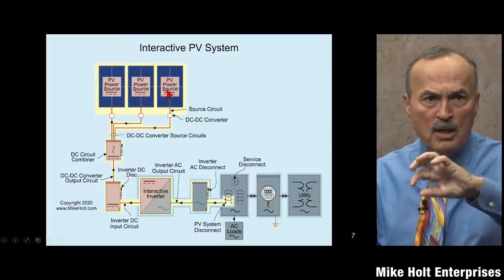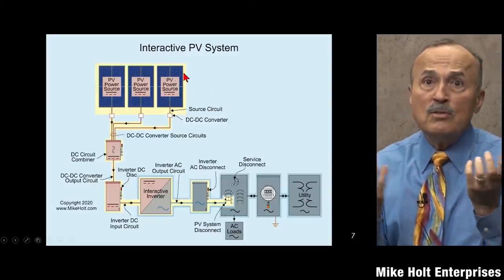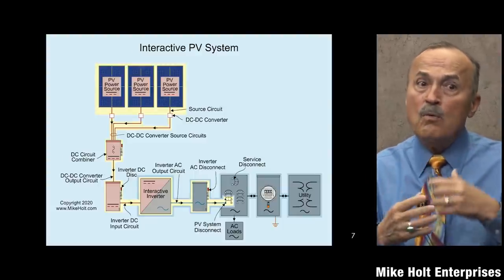Is the term 'power source' important? When we get to Article 705, we have power sources. Most electricians are dealing with just loads, but now we're dealing with power sources. Power sources include wind, solar, generators, and batteries. Transformers transform rather than being a source itself. Article 690 only talks about solar photovoltaic; wind is Article 694, and energy storage systems are Article 706.